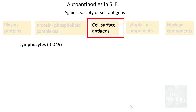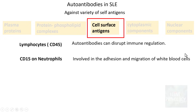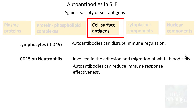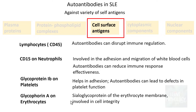The third category is cell surface antigens. On lymphocytes, autoantibodies target CD45, disrupting immune regulation. On neutrophils, autoantibodies target CD15 (involved in adhesion and migration of white blood cells), reducing immune response effectiveness. On platelets, autoantibodies against glycoprotein 1B (which helps in adhesion) lead to defects in platelet function. On erythrocytes, autoantibodies against glycophorin A — a sialoglycoprotein involved in red cell membrane integrity — result in hemolytic anemia.